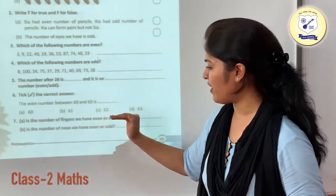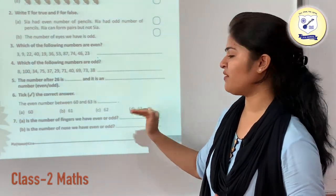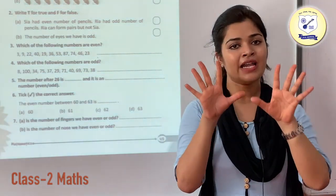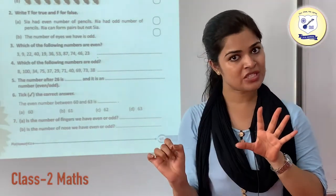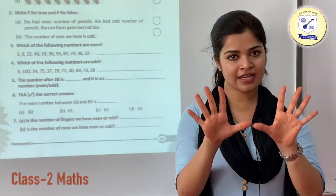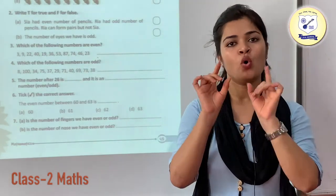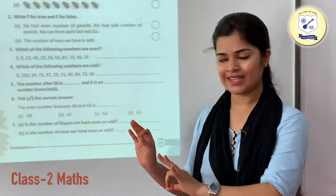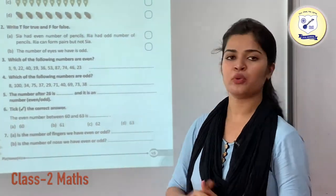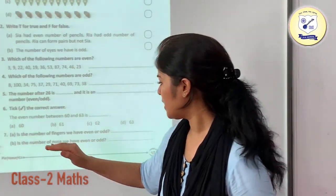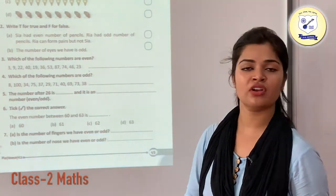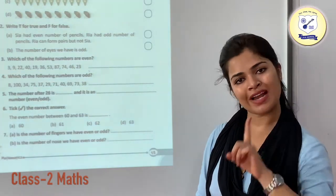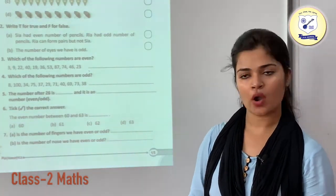Is the number of fingers we have even or odd? We have 10 fingers. 10 has 0 at its ones place and can form pairs of 2 — we have 5 pairs of 2 in 10. So this is going to be your even number. Is the number of noses we have even or odd? Since we just have one nose, that is going to be your odd number.